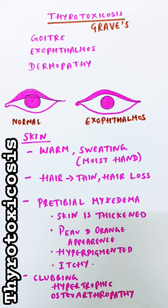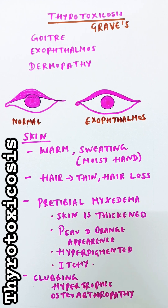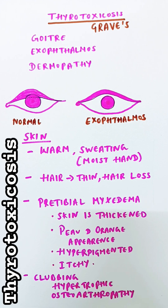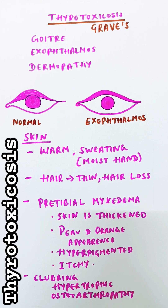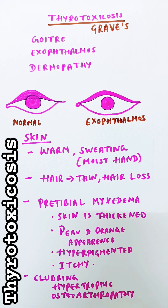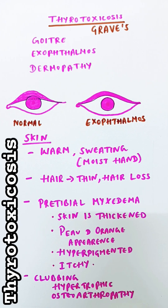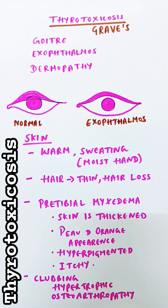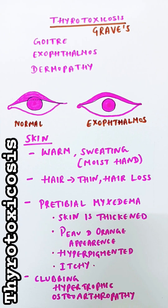The patient also has clubbing, which is a grade 5 clubbing. Hypertrophic osteoarthropathy, where involvement of the wrist joint can also happen. Clubbing is a classical feature seen in thyrotoxicosis.